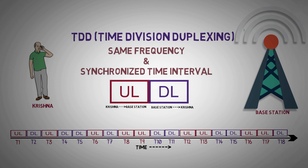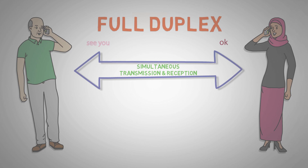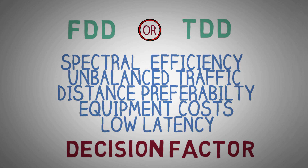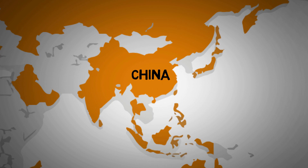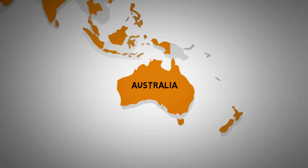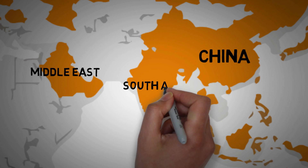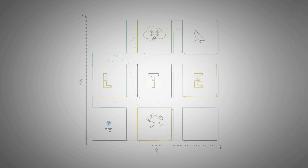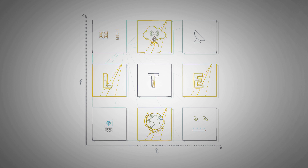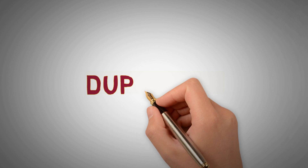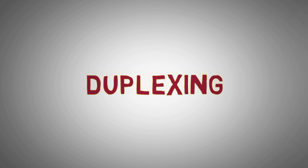How do we listen and speak at the same time over a communication channel? How does a telecom operator decide which duplexing method to use? Will the device that you use in China work in other parts of the world? Hi everyone, welcome back to the world of long-term evolution, 4th generation communication system. Today we will be discussing about duplexing.